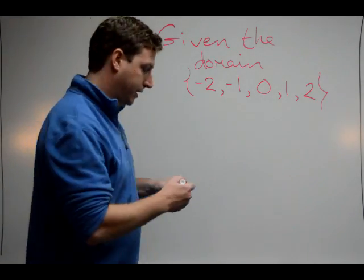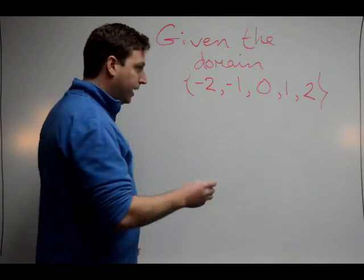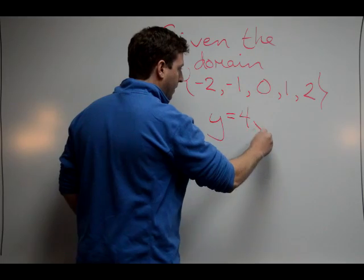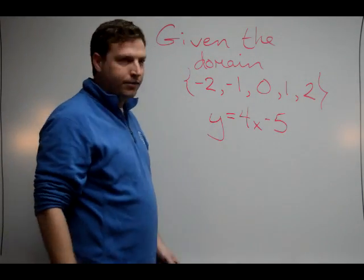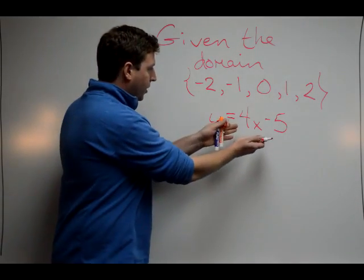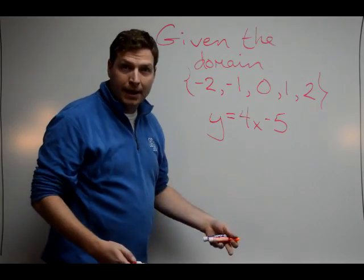So the first example that we have in our review is y equals 4x minus 5. I want to know what happens when I plug in the domain. What do I get for y? So we're going to make a table.